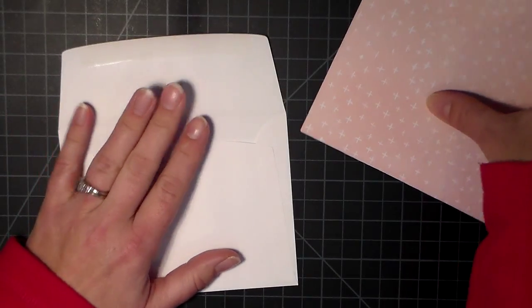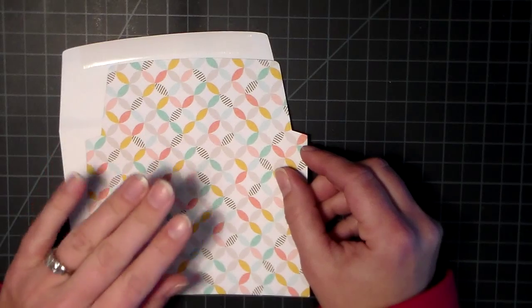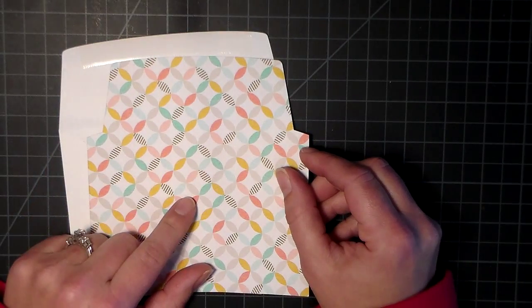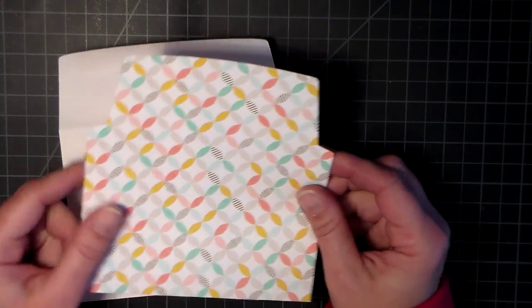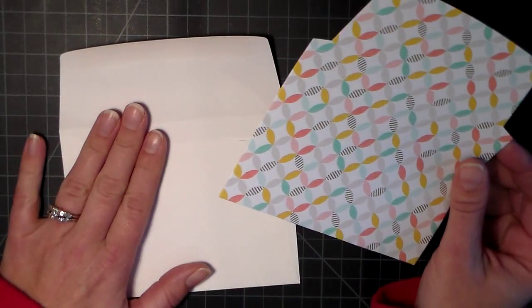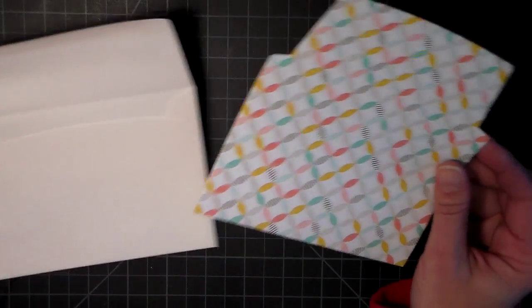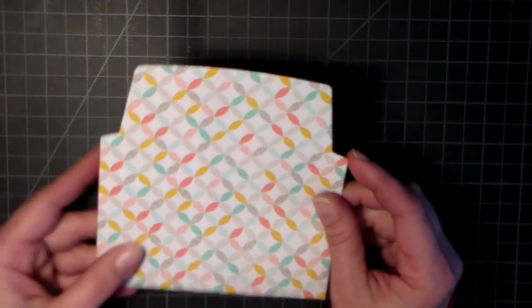Here I've got some pattern paper, this is from best year ever which is one of the celebration items, and I've gone ahead and die cut it with that die that fits the A2 size envelope. I want to show you the easiest way to stick these in because it can get a little bit tricky.